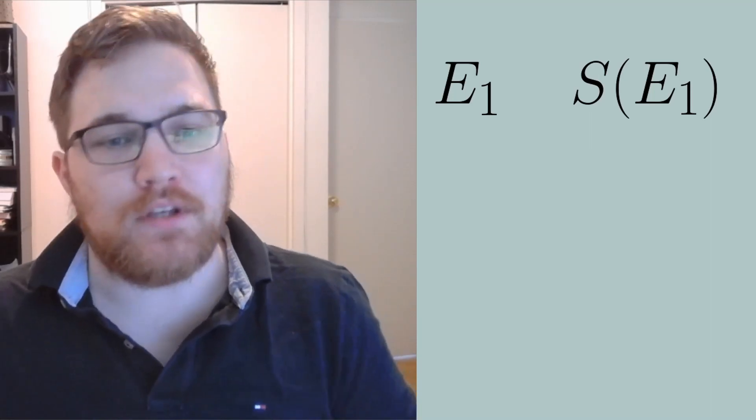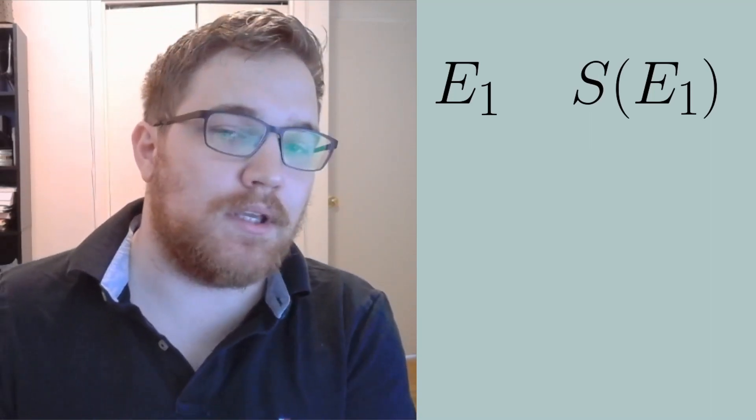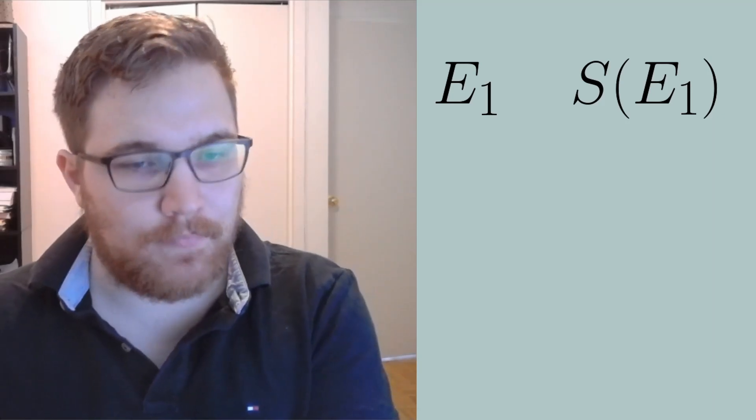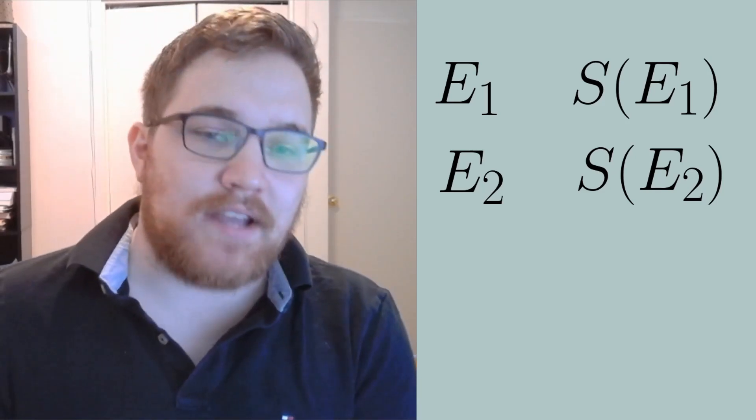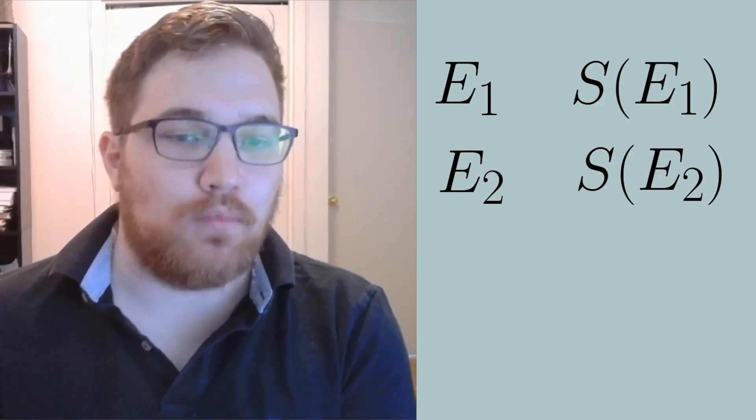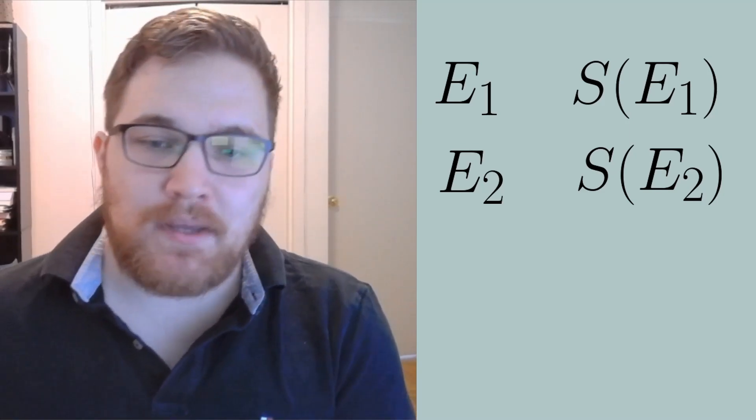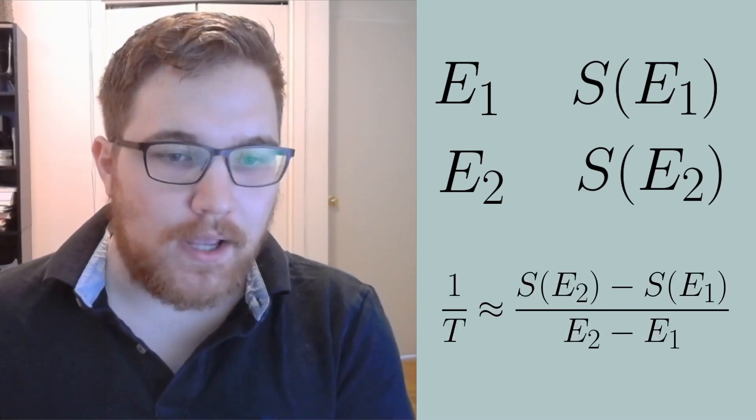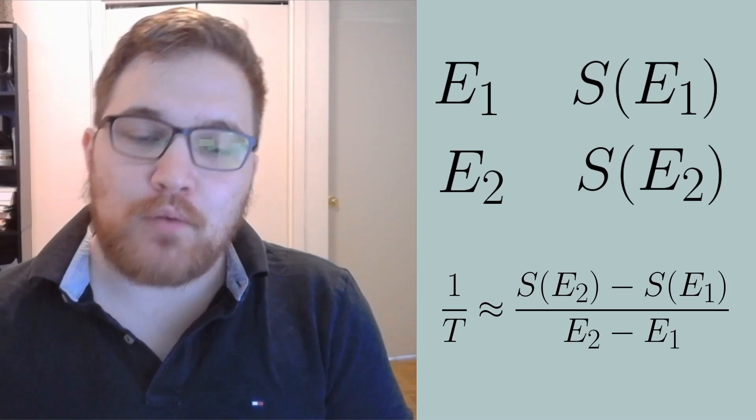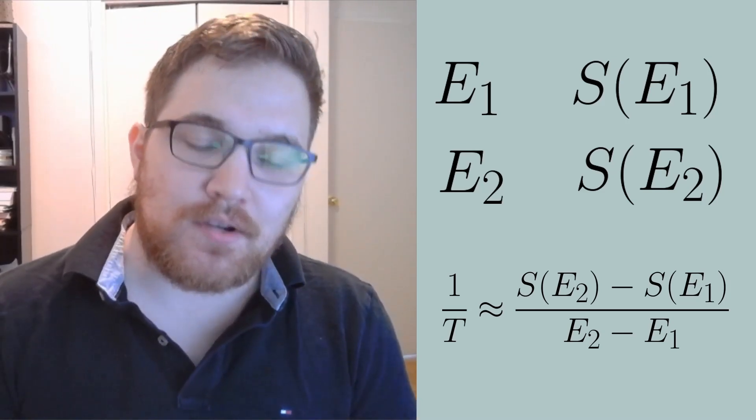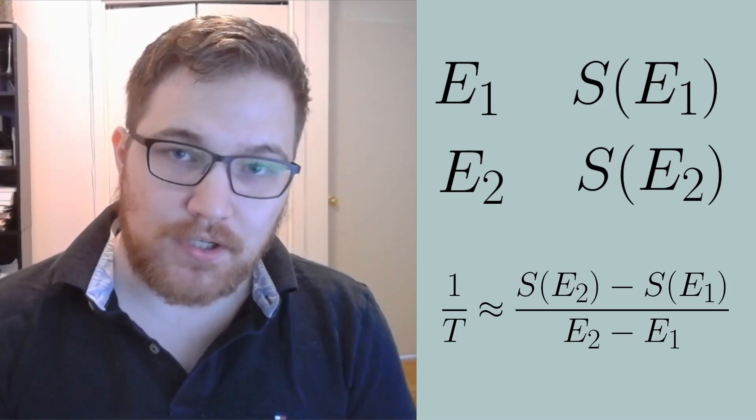To put this on more intuitive grounds, we can think of it in the following way. Let's say some physical thing that I am modeling has energy E1, then we denote the corresponding entropy as S of E1. We can do the same here for some other energy E2. For the sake of our example, let E2 be greater than E1. Then we can approximate the temperature by writing it in the following way: here we see that one over the temperature is just a slope, or the rate at which entropy changes with respect to changes in energy.